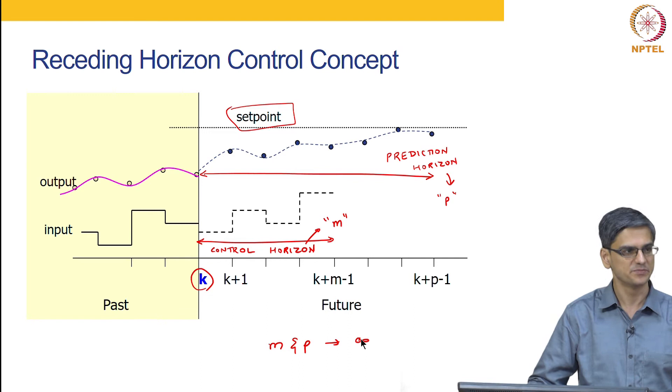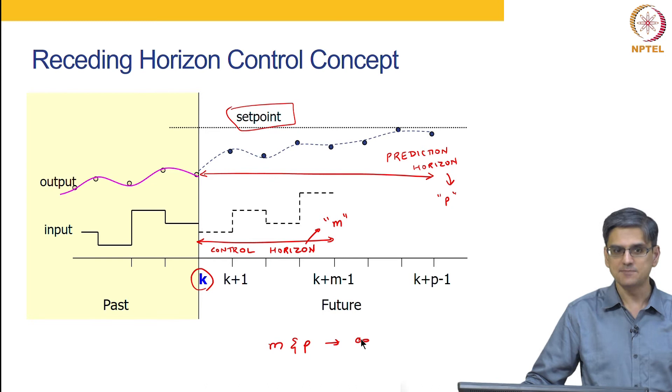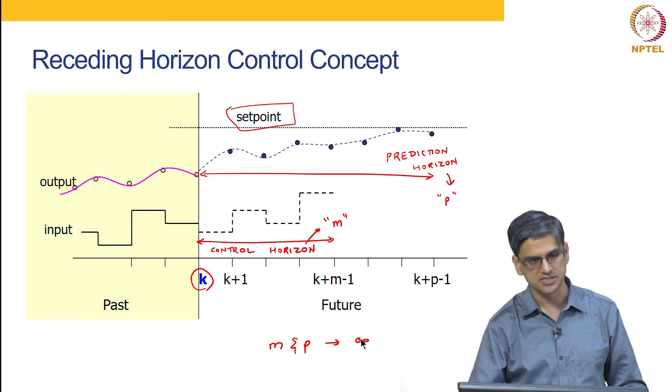And again that is the reason why, if you look at the theory of optimal control in 1960s and all that, M and P were all infinity. But in MPC, M and P have been finite. Part of the reason is because it originated in industry to solve a specific set of industrial problems. So all those constraints were also naturally incorporated in the MPC algorithm itself.